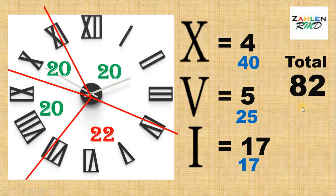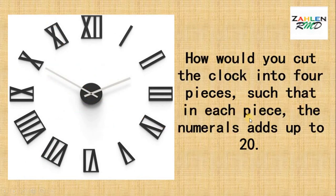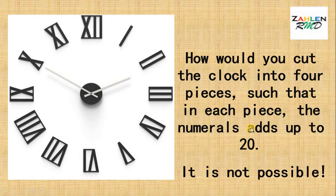And we know 82 is not divisible by 4. Therefore, this puzzle is not possible. So, we cannot cut the clock into 4 pieces such that in each piece, the numerals adds up to 20. And therefore, our answer is no solution.